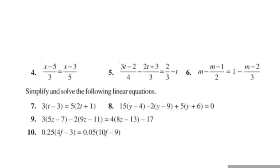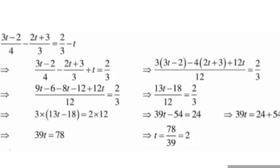Question number 5: 3t minus 2 upon 4 minus 2t plus 3 upon 3 is equal to 2 upon 3 minus t. In the solution, write all variables on one side: 3t minus 2 upon 4 minus 2t plus 3 upon 3 plus t is equal to 2 upon 3. Now find the LCM of the left hand side values, which is 12.